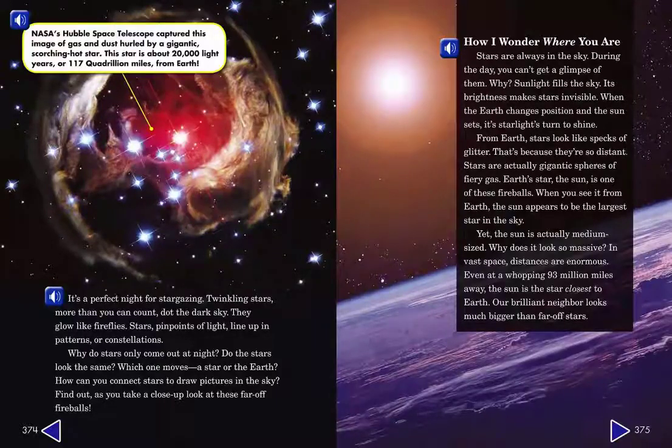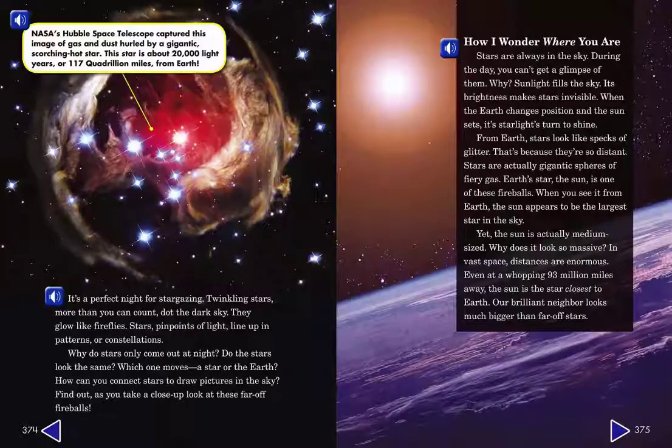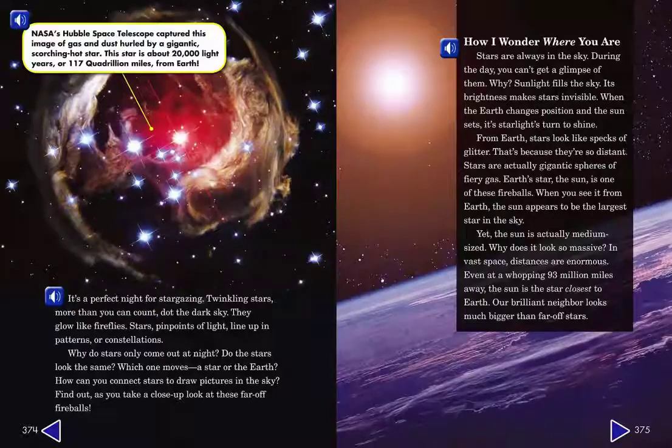When you see it from earth, the sun appears to be the largest star in the sky. Yet the sun is actually medium-sized. Why does it look so massive? In vast space, distances are enormous. Even at a whopping 93 million miles away, the sun is the star closest to earth. Our brilliant neighbor looks much bigger than far-off stars.